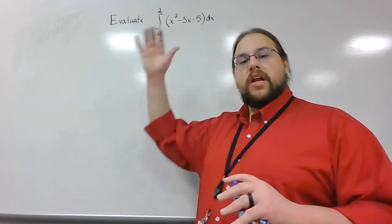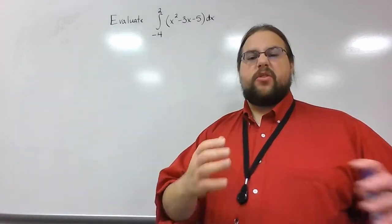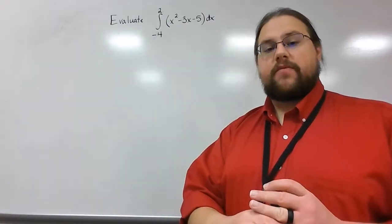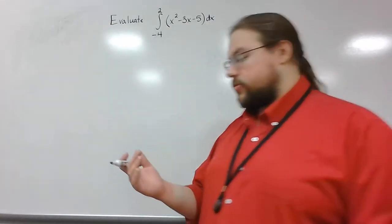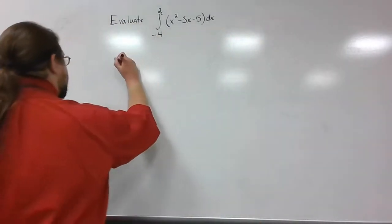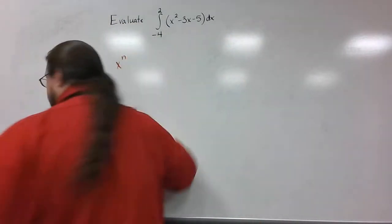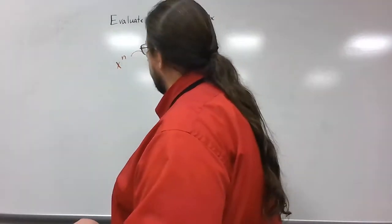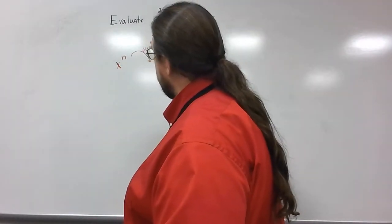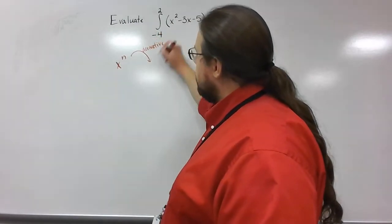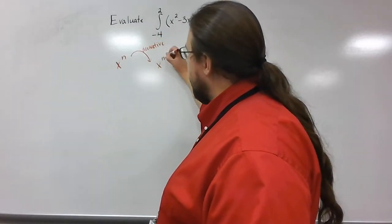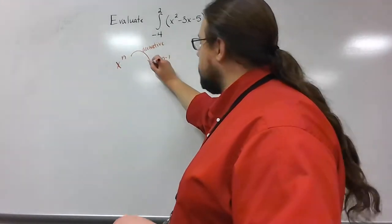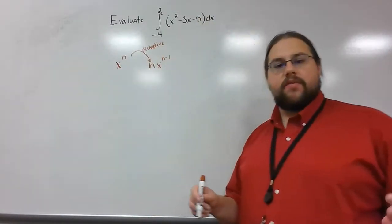The fundamental theorem says that if I want to do a definite integral, I just have to do the opposite of a derivative, called the antiderivative. Let me think about what we did with derivatives. In derivatives, we had a polynomial expression x to the n, where n is the exponent. When we took the derivative, we dropped the exponent down by 1 and multiplied by the old exponent, making it the new coefficient.